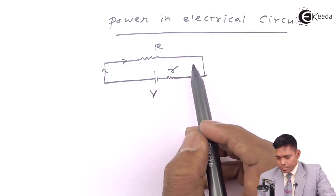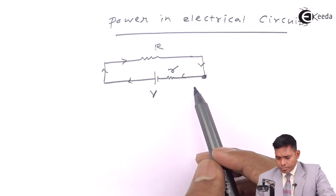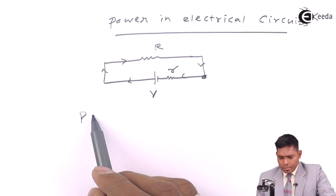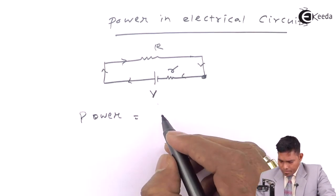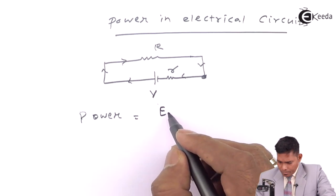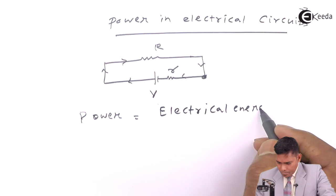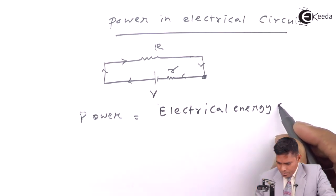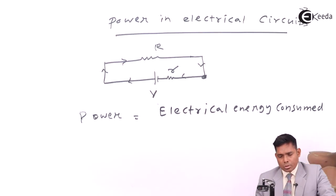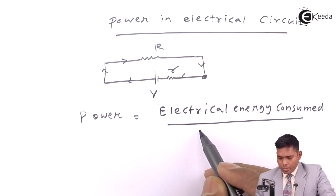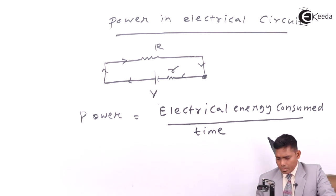The current will flow like this. Power is basically power of the circuit: electrical energy consumed divided by time, time of consumption.